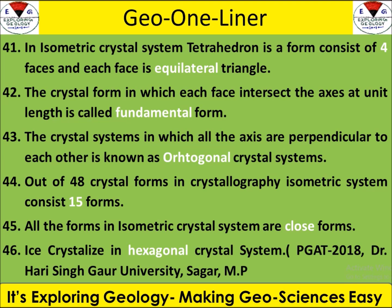In our previous quiz, the first question was about the isometric crystal system. The isometric crystal system has a tetrahedron form with 4 faces, and each face is an equilateral triangle — so face count and face shape come from the base form name. The next question is about the fundamental form, also called the unit form, which is when we cut the crystallographic axis at unit length — so we have two names: fundamental form and unit form.